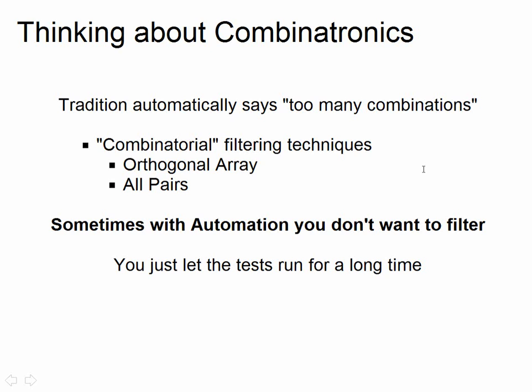A lot of the time in automation and testing generally, we get told there are too many combinations — too much to test. So we introduce combinatorial test design techniques. Really they're combinatorial filtering techniques, where you can objectively filter the scope of data using orthogonal arrays, all-pairs, or other mechanisms. But sometimes with automation, you don't want to filter — you just want to do lots of stuff, cover every individual item. It doesn't really matter about the combinations because everything is valid together. If you randomise it and just let it run for a long time and then run again, you'll pick up different problems. It depends what problem you're trying to solve. So we don't have to do what tradition says.